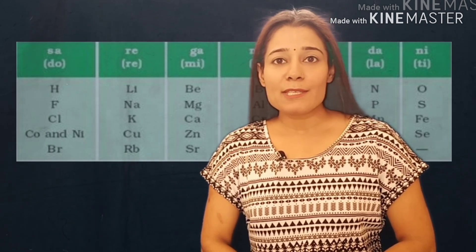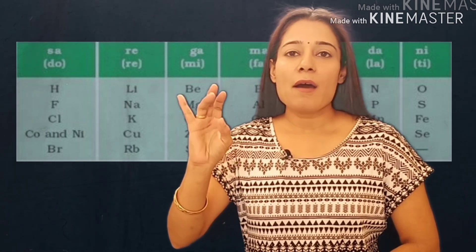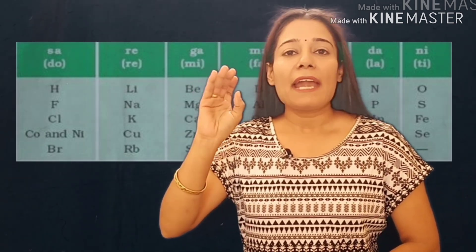In the Indian musical system, there are seven notes: Sa, Re, Ga, Ma, Pa, Dha, Ni and again Sa.